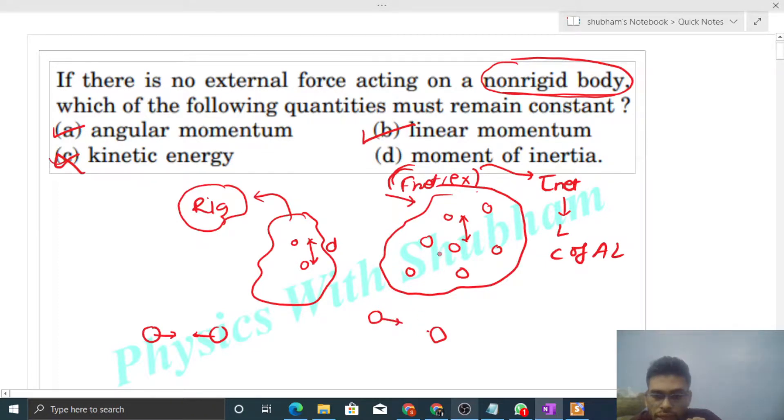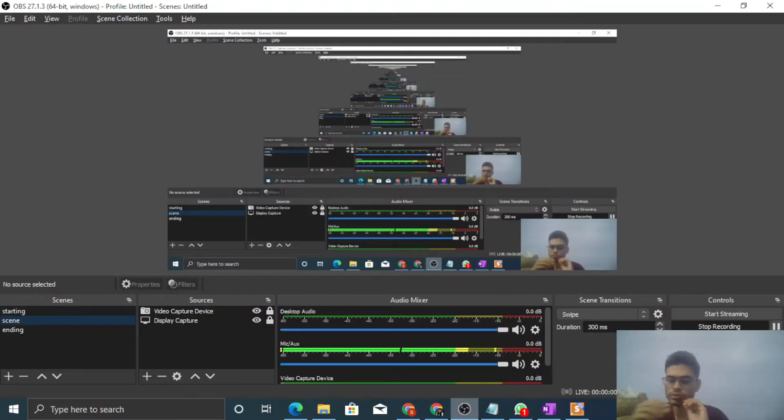So if the position of particles changes, then moment of inertia will change because moment of inertia doesn't depend on force - it depends on the particle's position. So option D is also not correct. I think you have understood. Let me know if you still have any confusion, we can discuss further. Keep working hard, best of luck, bye.